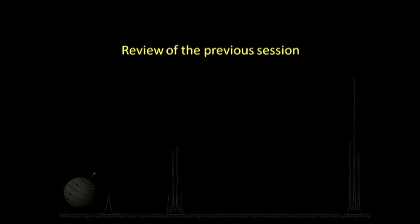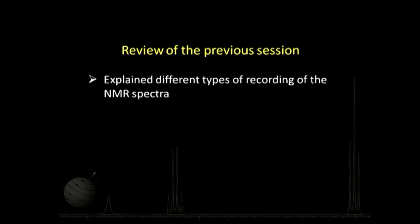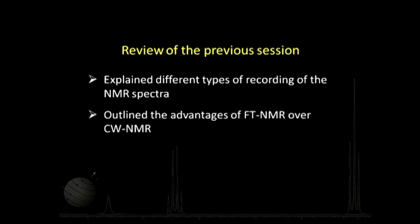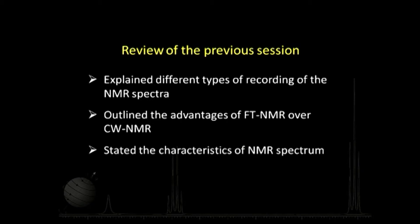Let us review what we did in the previous session. We basically explained different types of recordings of NMR spectra — continuous wave NMR spectra and FTNMR. We outlined the advantages of FTNMR over CW NMR spectroscopy, then stated the characteristics of NMR spectrum. We explained one of the characteristics that happens to be chemical shift, and from there we are building up what we are going to do in today's session.